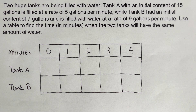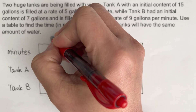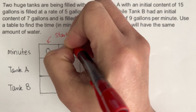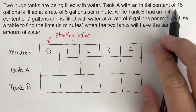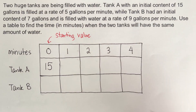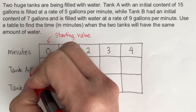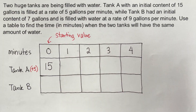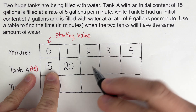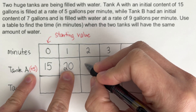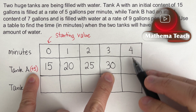Starting with Tank A: the initial content is 15 gallons, so I'll write 15 at the starting value. It is filled at a rate of 5 gallons per minute, so we add 5 gallons every minute. On the first minute: 15 plus 5 is 20. On the second minute: 20 plus 5 is 25. On the third minute: 25 plus 5 is 30. On the fourth minute: 30 plus 5 is 35.